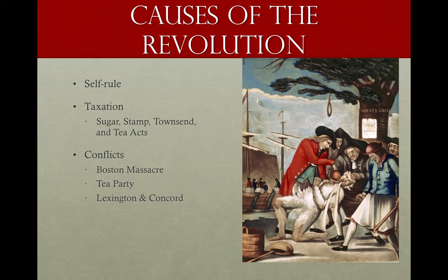Britain realized they eventually had to lay down the hammer if they were going to be effective colonizers controlling a colony subservient to them — and they simply needed the money. They were going bankrupt from all the debt from the Seven Years' War and from housing troops in the Americas. So they decided to circumvent the smugglers and traders, and also make tea cheaper, all in the same stride. They set up the Tea Act, which made tea cheaper by selling it directly to the people, generating profit for the East India Company and then for the British government.